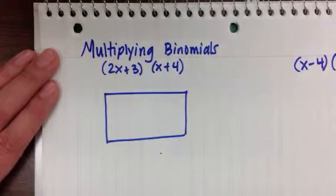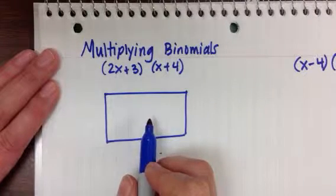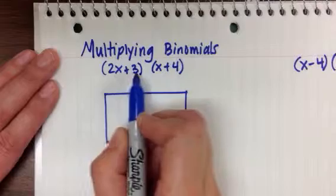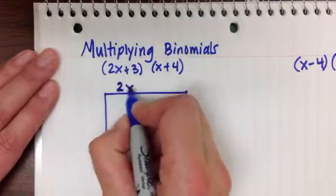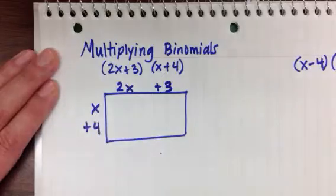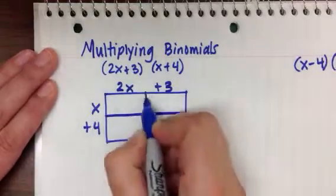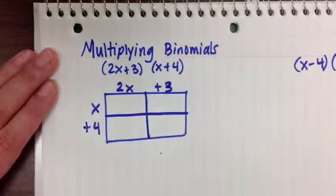And we all know if we have a rectangle, to find the area of a rectangle we do length times width. So if I use 2x plus 3 as the length of one side and I use x plus 4 as the length of the other side of the rectangle, I'm going to break this rectangle into parts and find the area of each part.